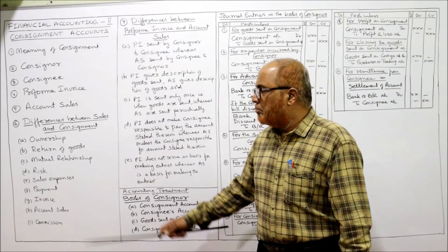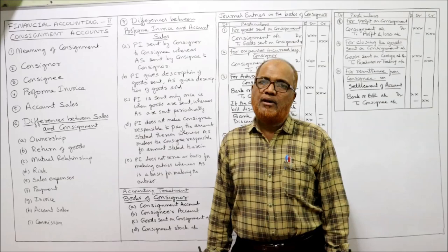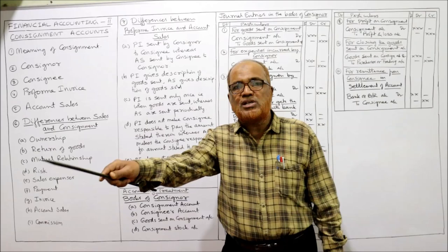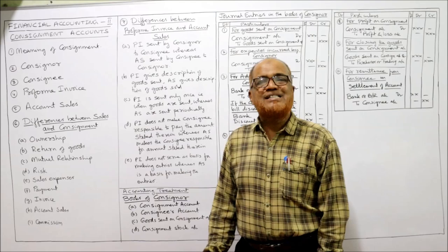Third difference — mutual relationship: the relationship between Consigner and Consignee is that of principal and agent. Consigner is the principal and Consignee is the agent; whatever instructions are given by the principal, the same must be followed by the agent. But in case of sale, the relationship is simply that of seller and buyer.